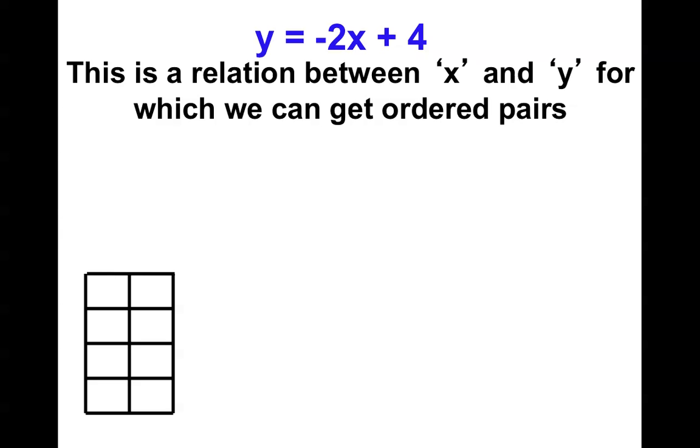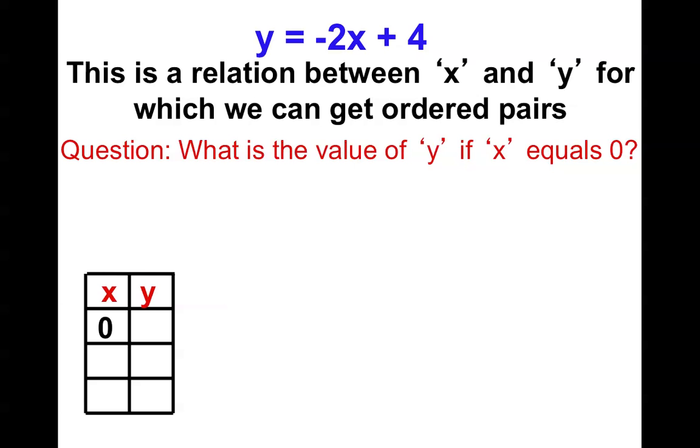I start off by making a table. I call it my x and y table. You've also heard of the t table, probably from your previous teachers. And I ask myself a very simple question. I go, what is the value of y if x equals 0? So what I do is I pick x to be 0, and then I figure out what y is. Well, I go right up here, and if x is 0, negative 2 times 0 is 0, 0 plus 4 is 4. So when x equals 0, y equals 4. And I've got this relationship: x equals 0, y equals 4.